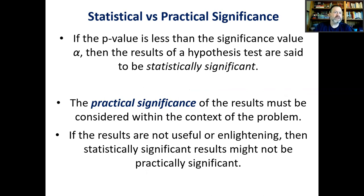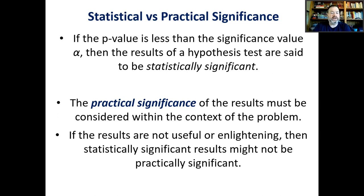Next up: statistical versus practical significance. If the p-value is less than alpha, the results of a hypothesis test are said to be statistically significant — that's actually the definition of statistically significant from Section 4.3. The practical significance of the results must be considered within the context of the problem. If the results are not useful or enlightening, then statistically significant results might not be practically significant.